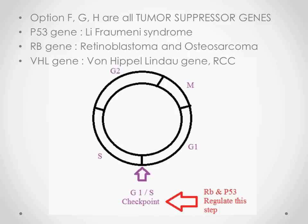The RB gene is associated not only with retinoblastoma but also with osteosarcoma. Examiners like to test this because RB stands for retinoblastoma and we tend to forget it's also associated with osteosarcoma. The VHL gene — the last option — stands for Von Hippel-Lindau. Von Hippel-Lindau syndrome is associated with an array of neoplasias, but most specifically with RCC — renal cell carcinoma. It is also associated with pheochromocytomas, retinal angiomas, and cerebellar hemangiomas, but the most common association is RCC.